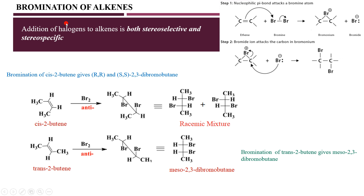One more example is the addition of halogens to alkenes — this is again anti-addition, from the opposite side. Formation of the racemic mixture depends on cis-2-butene. Formation of the meso compound depends on trans-2-butene. So bromination is again a stereospecific reaction, because you will get meso only when you use trans, and if you use cis, you are going to get a racemic mixture.